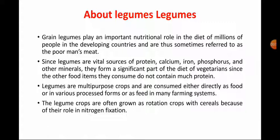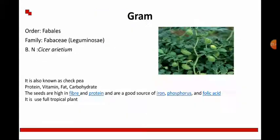Legumes play an important role in nutrition as well as the diet of millions of people in developing countries. They are also referred to as poor man's meat. Legumes contain protein, calcium, iron, phosphorus, and other minerals, forming a significant part of the diet in vegetarian food. They are a multi-purpose crop, consumed either directly as food or through different processing. Legume crops are grown as rotation crops with cereals and other crops, and their main role is to fix nitrogen in the soil.